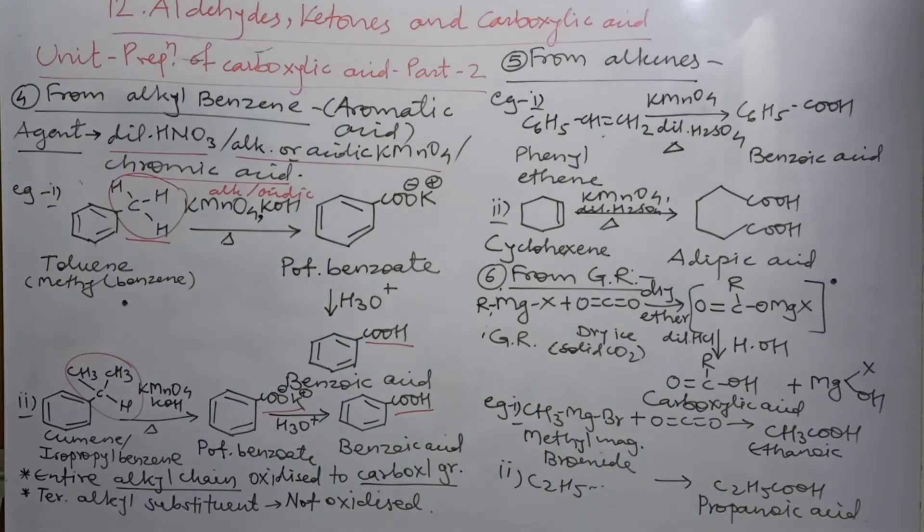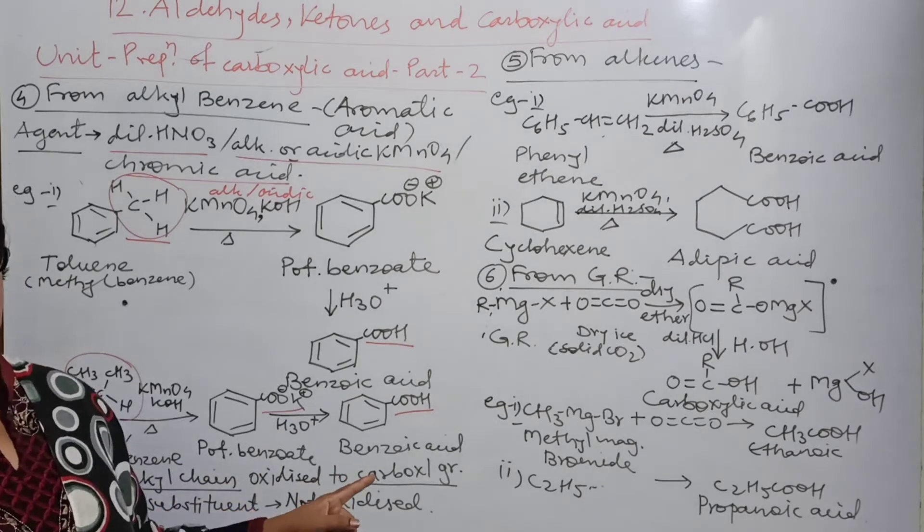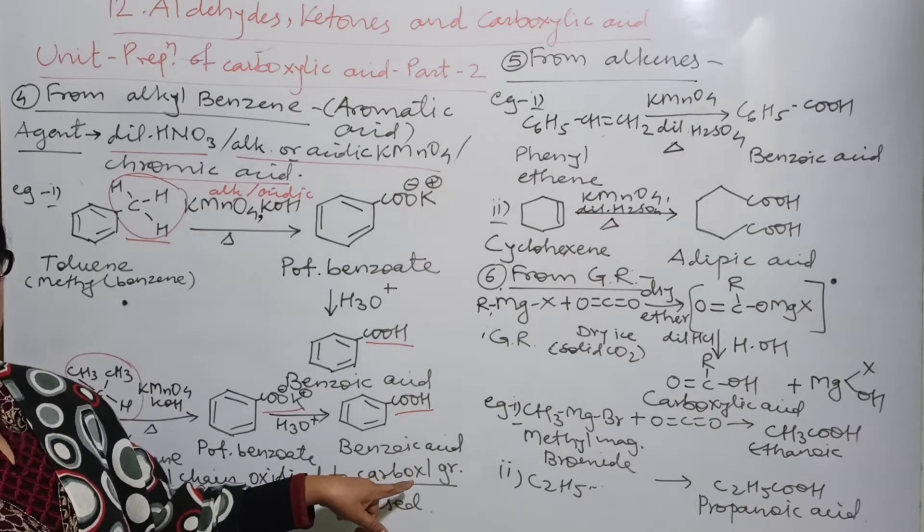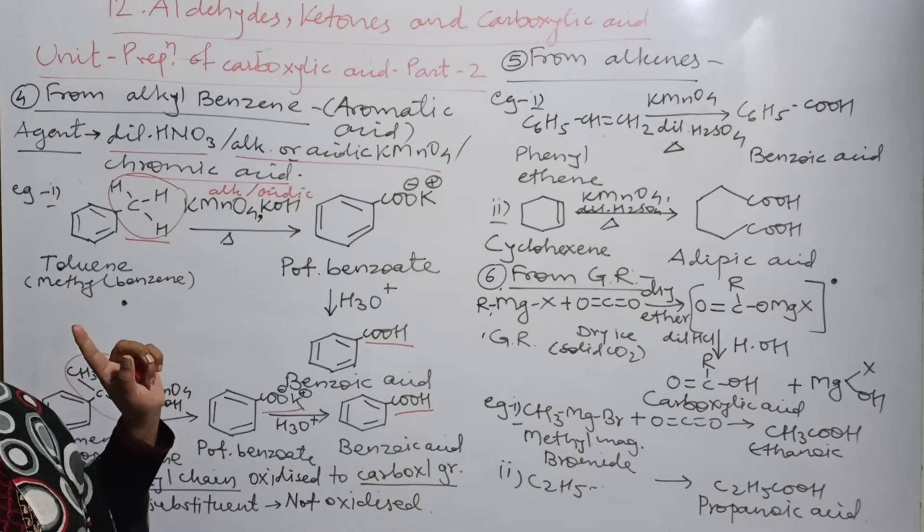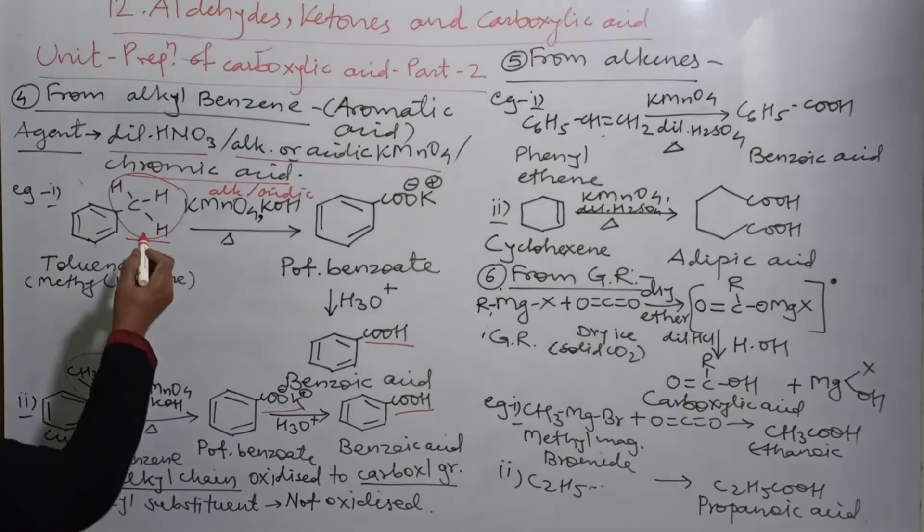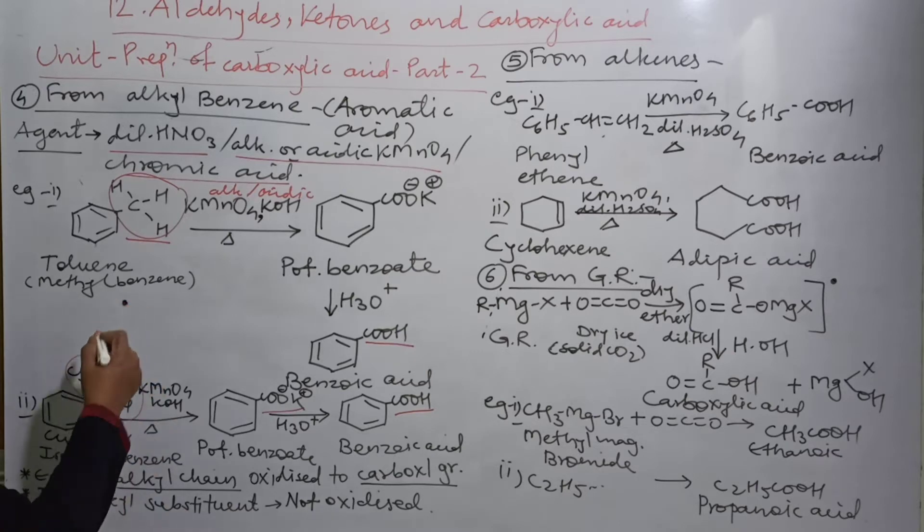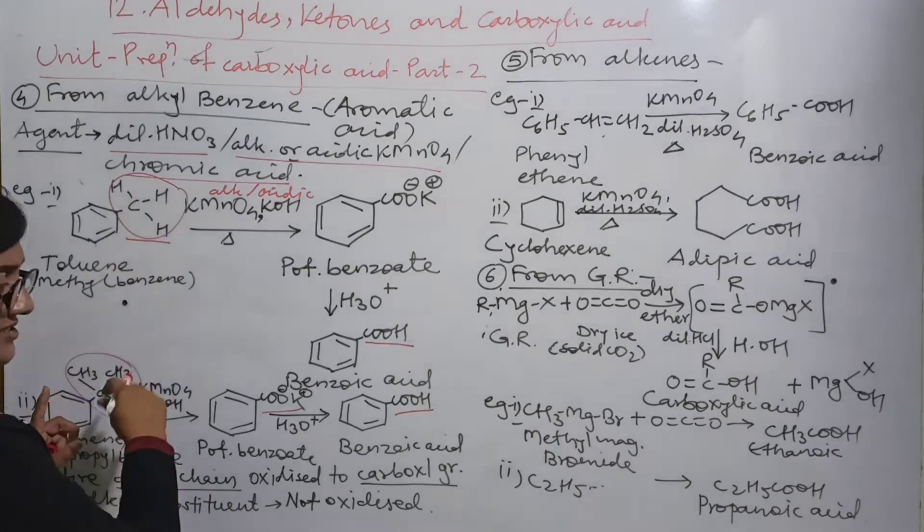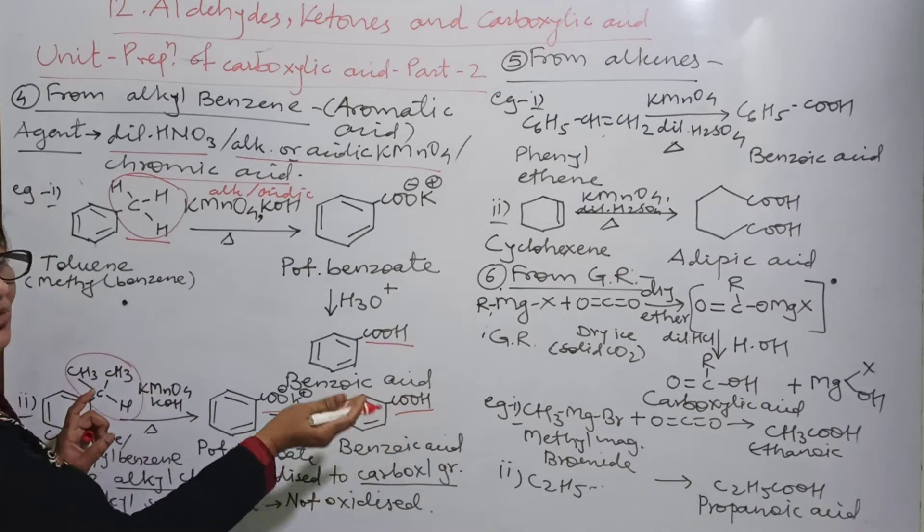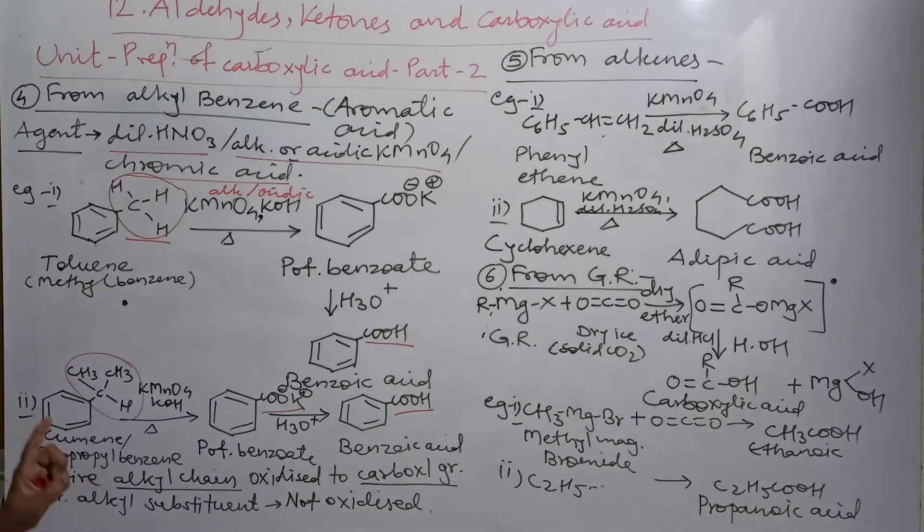You have to remember the remembering tip which is noted here. What is the remembering tip? The entire alkyl chain oxidizes to carboxyl group, means COOH group. Whatever the length of the chain - here only CH3 is present, here CH(CH3)CH3, that is isopropyl group. Both are different but still they convert into the same group, that is COOH.